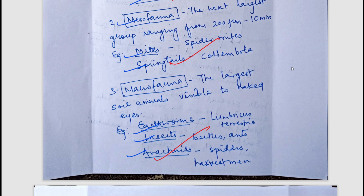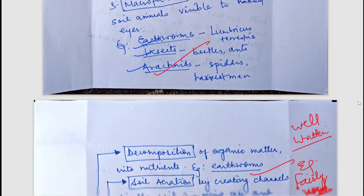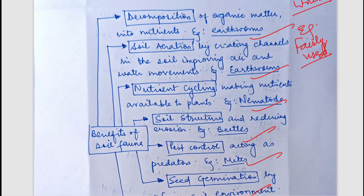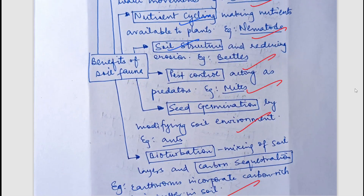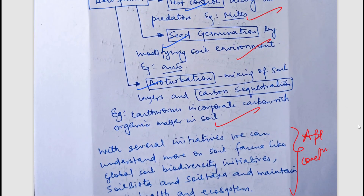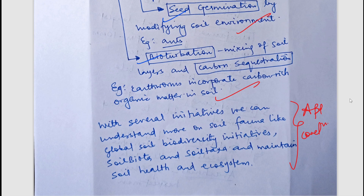Adding examples and facts enhances your answers. When writing facts, try to write the source — for example, ICAR or the Food and Agriculture Organization — as that will strengthen your answers. The benefits of soil animals mentioned include decomposition, nutrient recycling, soil structure improvement, pest control, seed germination, bioturbation, and carbon sequestration. Very well written and appropriately concluded.